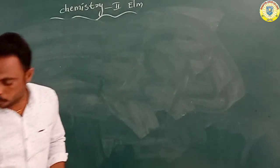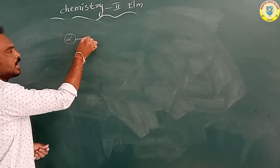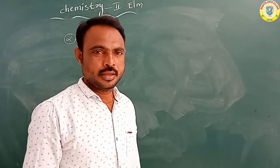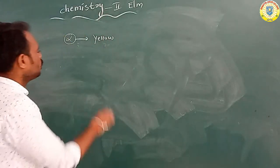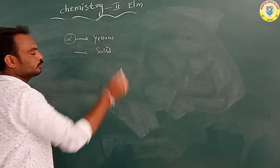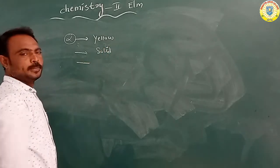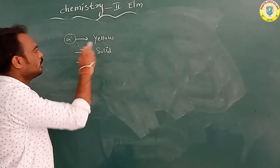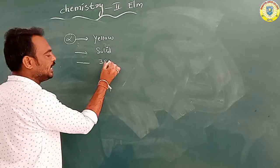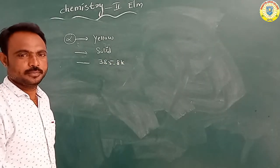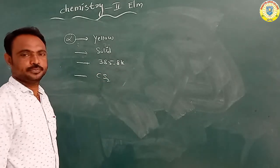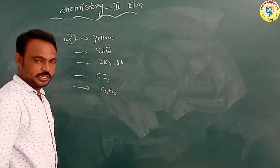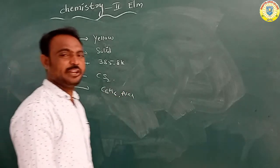Alpha sulphur, that is rhombic sulphur, contains a yellow colour and is a solid compound. The melting point of alpha sulphur is 385.8 Kelvin. It is dissolved in CS2, that is carbon disulphide.